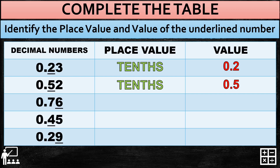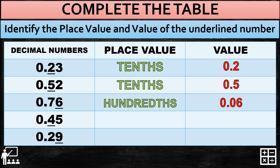For 0.76, the underlined number is 6. The place value of 6 is hundredths because it is the second digit after the decimal point. We know that the hundredths place is written as two decimal places, so the value is 0.06. This indicates that there are two decimal places after the decimal point.